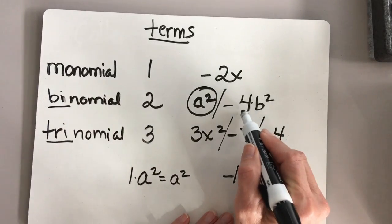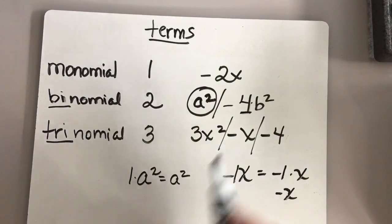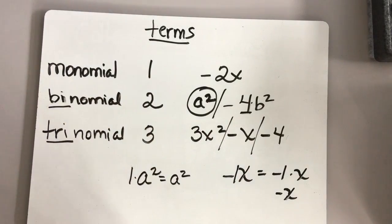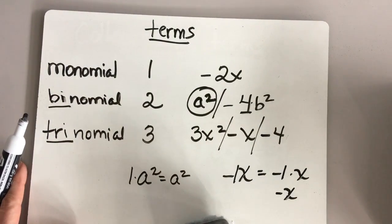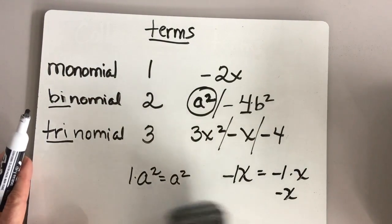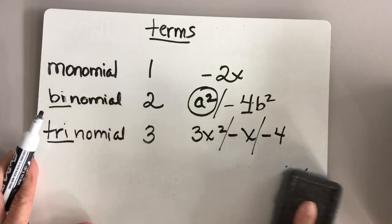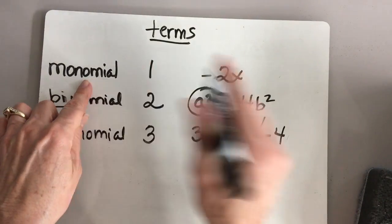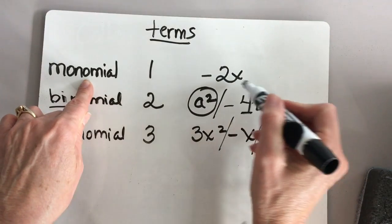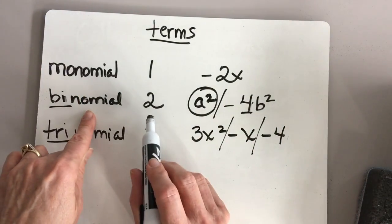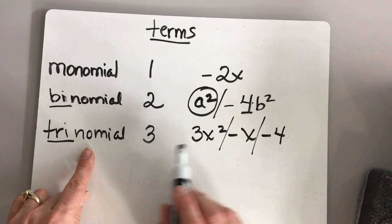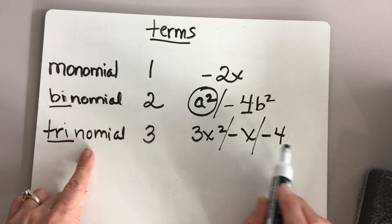Notice that this has a number here — it's actually the negative 4 that goes with that term. The main thing I want you to understand is: one term is called a monomial, two different terms is a binomial, and three different terms is a trinomial.